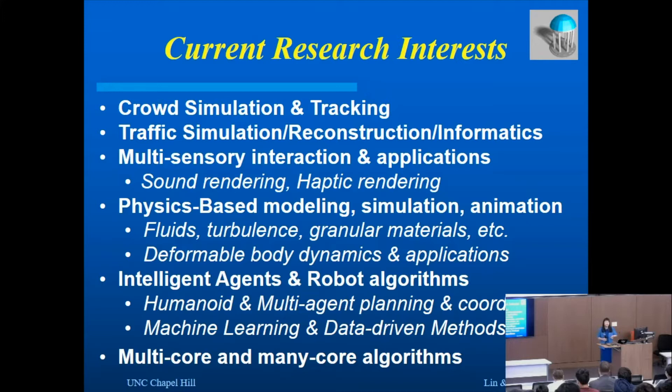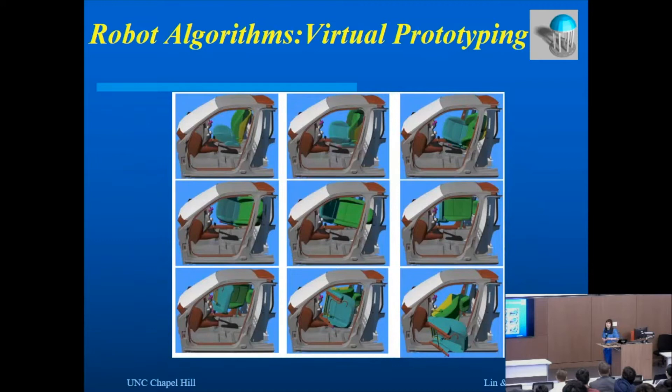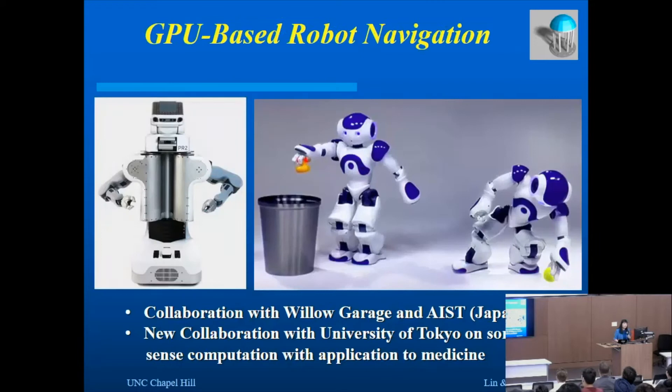We also work on intelligent agents and robot algorithms for multi-agent planning and coordination. Multi-agent systems include things like insects, people, social structures, and collective behaviors, as well as robots themselves. We use a lot of machine learning and data-driven approaches, and we also leverage current architectures on multi-core and many-core systems to exploit the capabilities of modern desktop and computing clusters.